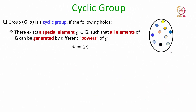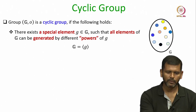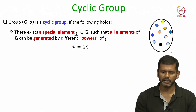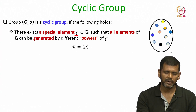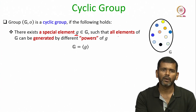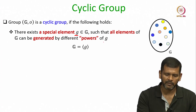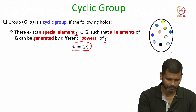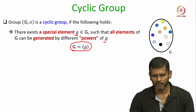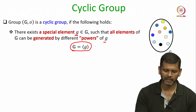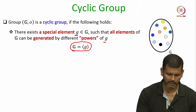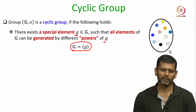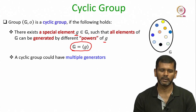Now let us define cyclic groups. A group is called a cyclic group if there is a special element g called the generator, and the speciality of this element is that you can generate all the elements of the group by computing different powers of the generator. In terms of notation, we use angular bracket notation with the generator written inside, denoting that by taking different powers of g starting from 0 onwards we can generate all elements of the group.